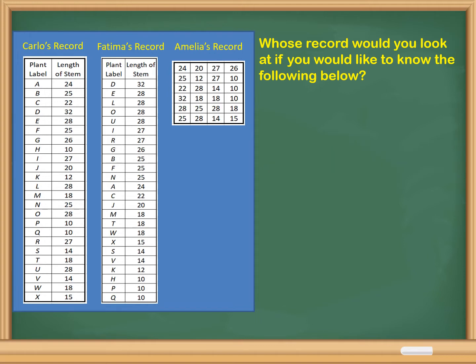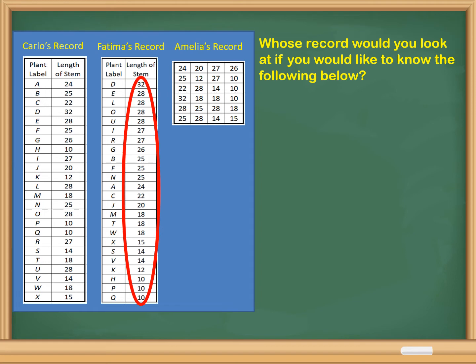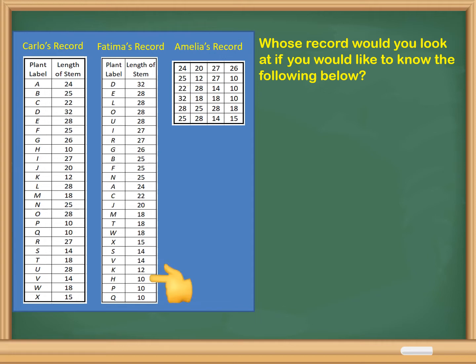We can easily find the longest stem measurement, which is 32 millimeters, and that is plant B. The shortest stem measurement is 10 millimeters, and those plants are plants H, P, and Q.